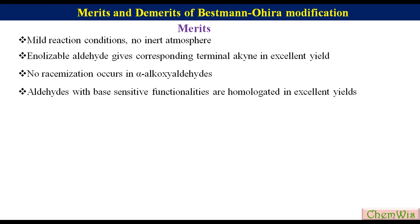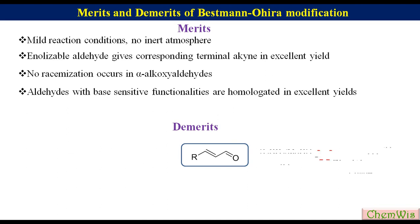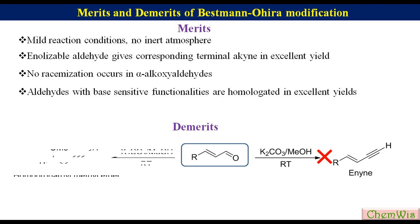The modification also has certain demerits. For example, alpha-beta unsaturated aldehydes do not give the expected alkynes. In this case, the main isolated product was a homo-propargyl methyl ether, probably because of initial conjugate addition of methanol followed by transformation to the alkyne.